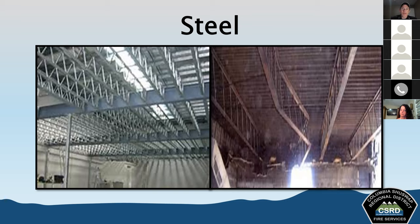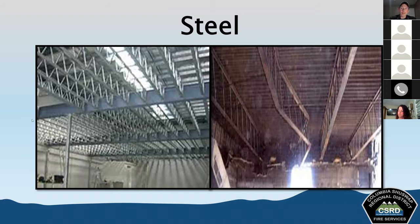Other metals seen in construction include aluminum, used for decorative features, roofing, flashing, gutters, downspouts, window and door frames, exterior curtain wall panels, sunrooms, screened porches, carports, and awnings. Aluminum is affected by heat more rapidly than steel. Tin can be used to produce metal ceiling tiles and roof covering. Copper is found in wiring, pipes, gutters, and decorative elements. Lead may be found in older pipes, flashing, and as a component of stained or leaded glass windows.